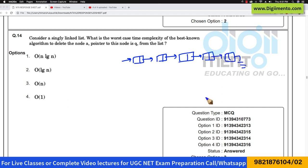Now let us look at this problem. They are saying consider a single linked list. Assuming this is a single linked list, what is the worst case time complexity of the best known algorithm to delete a node pointed to by this node Q? So assuming that you want to delete this node.